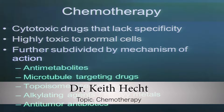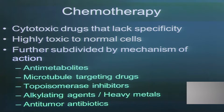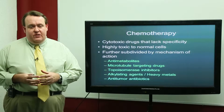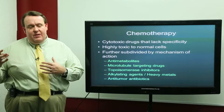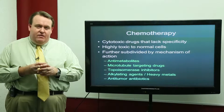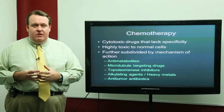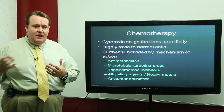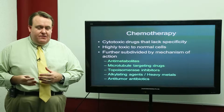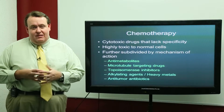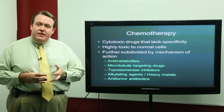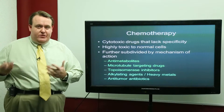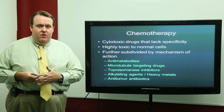Let's start off with chemotherapy, since that was the first thing we were ever able to use to successfully treat cancer. Chemotherapy refers to cytotoxic drugs that lack specificity. It's kind of a broad-spectrum killer — similar to broad-spectrum antibiotics, it kills many types of fast-growing cells. That's why chemotherapy has a lot of toxicities associated with it, because it isn't able to differentiate between a cancer cell and a normal cell that just happens to grow rapidly, like your skin or your blood.